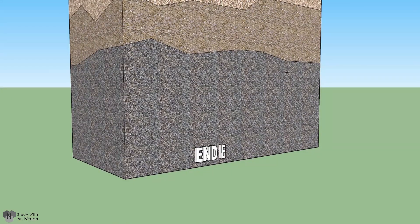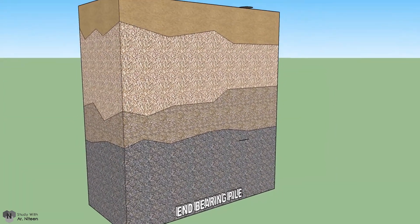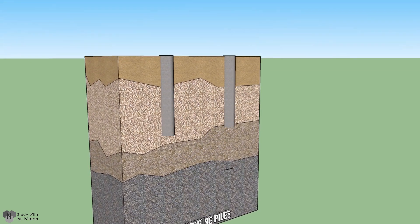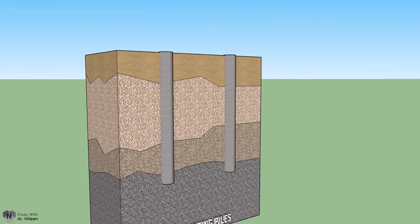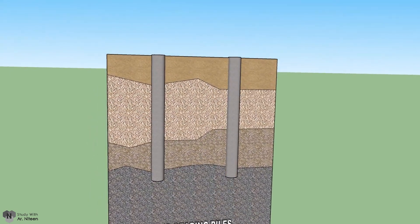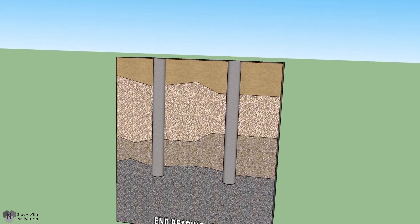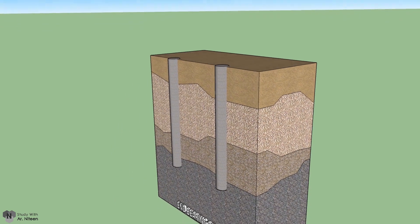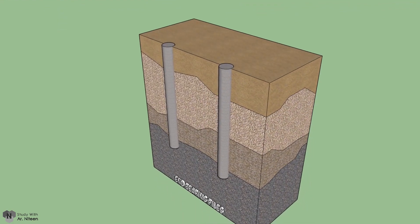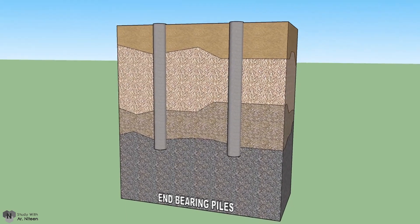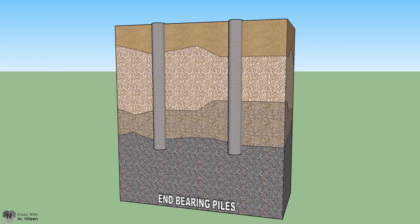End bearing piles: In this type of pile, the bottom end of the pile rests on a strong layer of soil or rock. The pile should penetrate in the hard strata at least three times the diameter of the pile. The loads from the superstructure are directly transferred to the hard soil, as a result the pile acts as a column. End bearing piles are selected when the depth of the hard soil strata or bedrock is within a reasonable range.